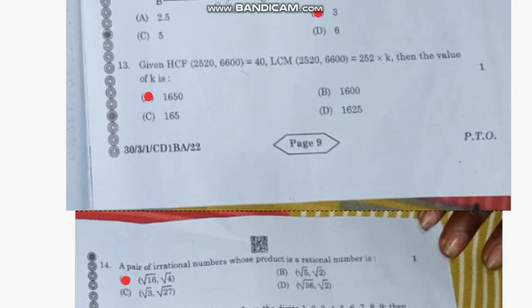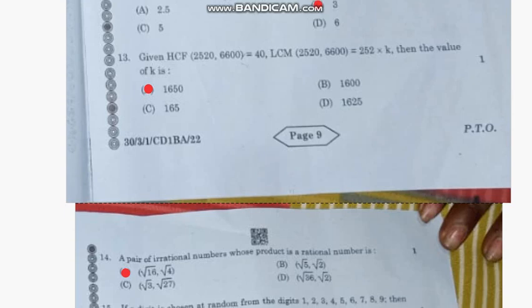Question number 13: Given HCF of 2520 and 6600 = 40, 52 × k, then the value of k is—the correct answer is option A, 1650.